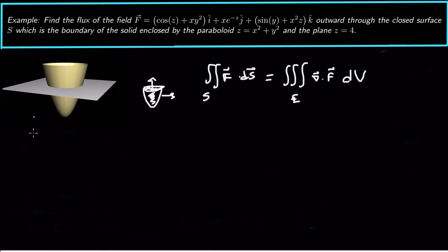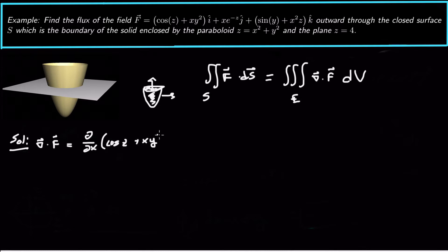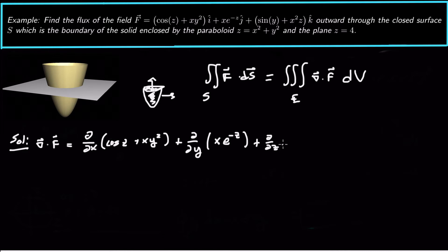So we need to first take the divergence of this field, and that's going to be ∇·F, which is the partial with respect to x of the first component, (cosine z + xy²), plus the partial with respect to y of the second component, the ĵ component, which is xe^(−z), plus the partial with respect to z of the last component, (sine y + x²z).